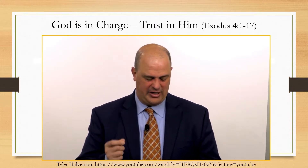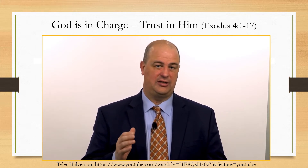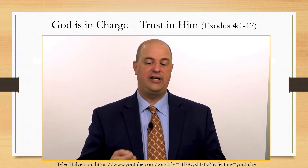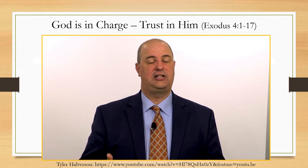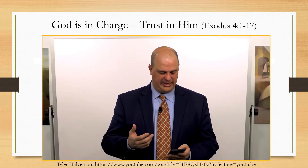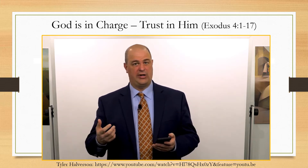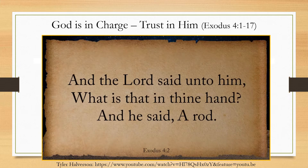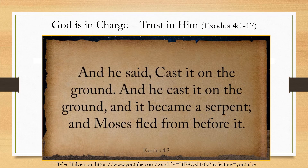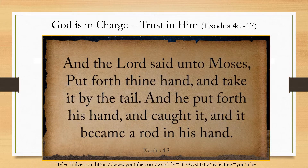God actually listens to Moses' concerns and gives him visual evidence that God is ultimately in charge. Moses wants evidence that God will be with him. The Lord says, 'What is that in thine hand?' Moses says, 'A rod.' God tells him to throw it on the ground. Moses throws it and it turns into a snake — and Moses runs away. God says, put forth your hand. Moses overcomes his fear and trusts the Lord enough to grab the snake, which becomes a rod again.